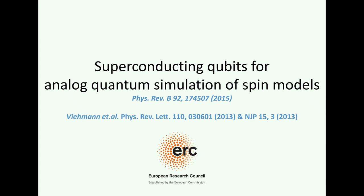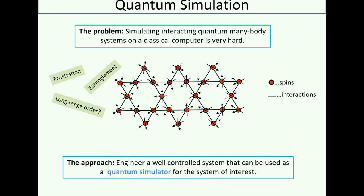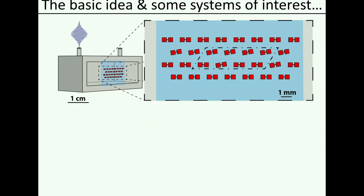We want to build a simulator of a quantum system which is very hard or essentially impossible to simulate on a classical computer. This depends on what I want to know about the system — is it a frustrated system, do I want to know dynamics or just the ground state? Our idea is really to try and map some of those Hamiltonians onto our qubit-cavity system because we have it much better under control and we can change parameters freely.